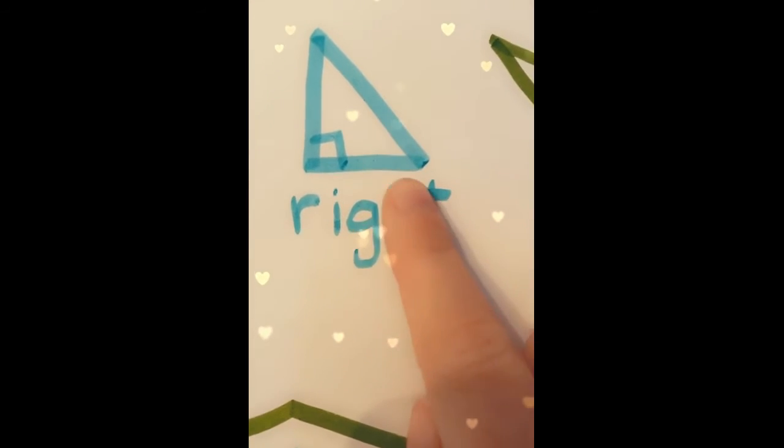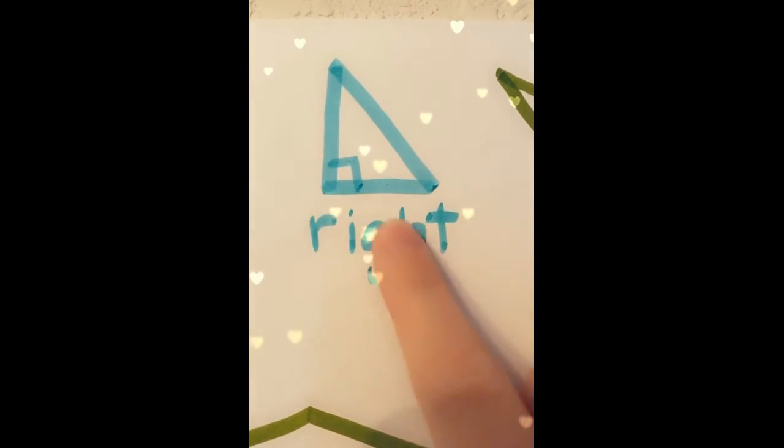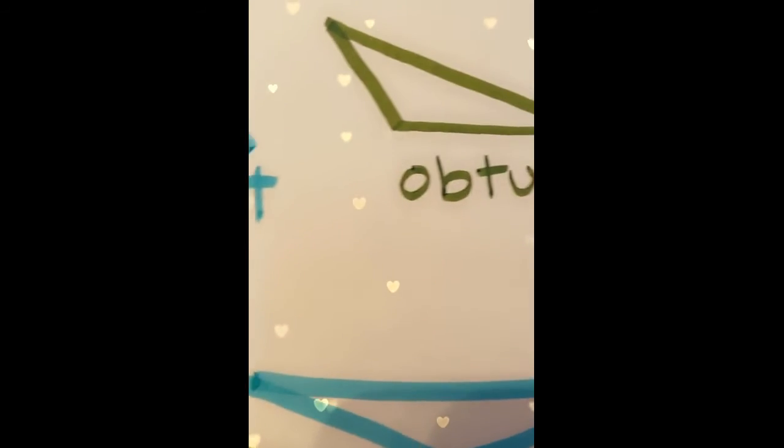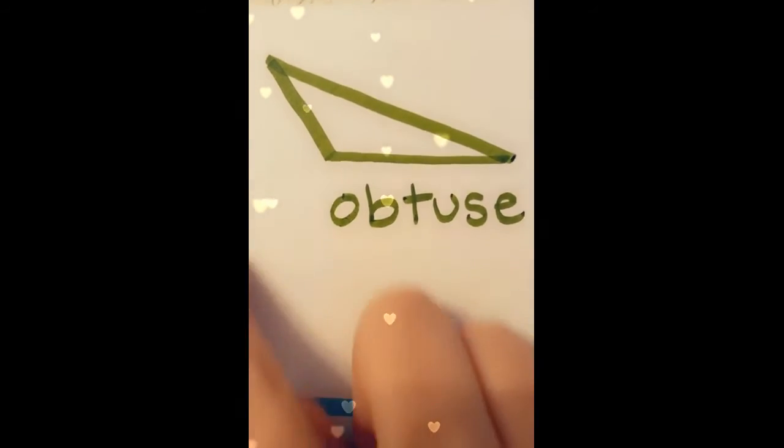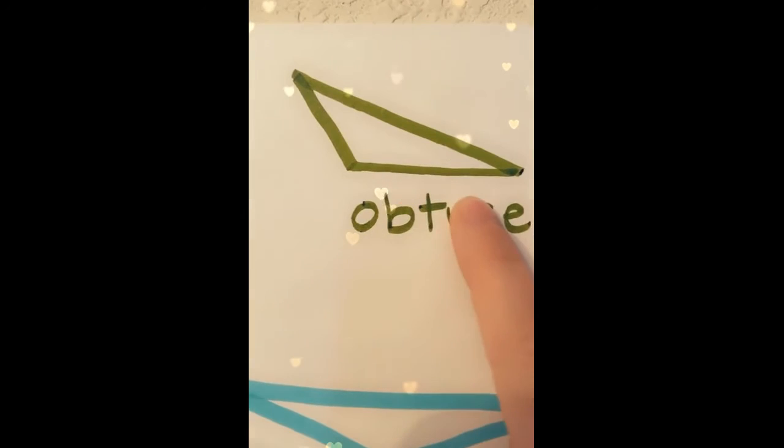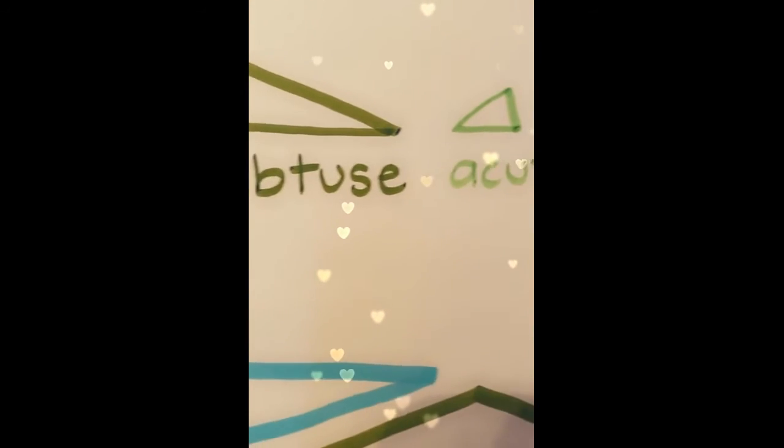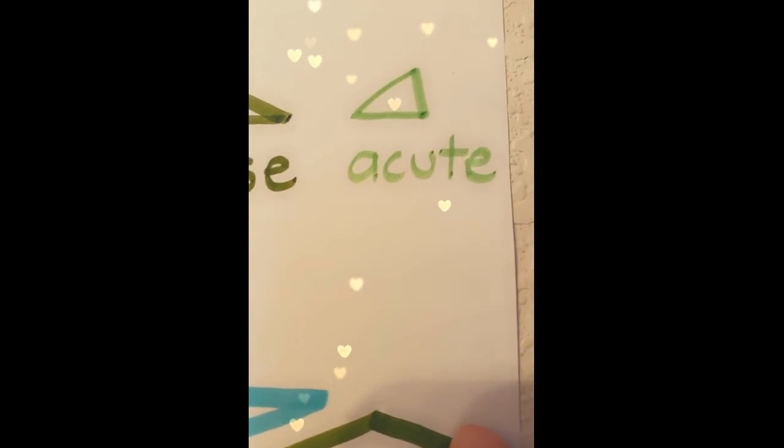First up is the right angle, and if you saw the angles video, here right here we have a right angle, so here is my right triangle. Next up I have an obtuse angle here, therefore this triangle is an obtuse triangle. Last little one, you might have guessed it, is an acute triangle that has an acute angle in it.